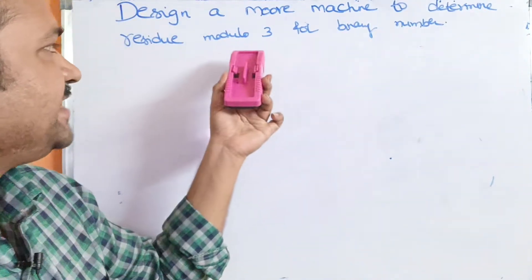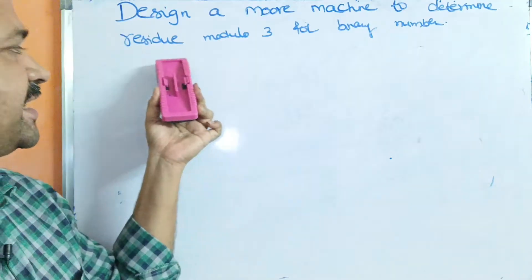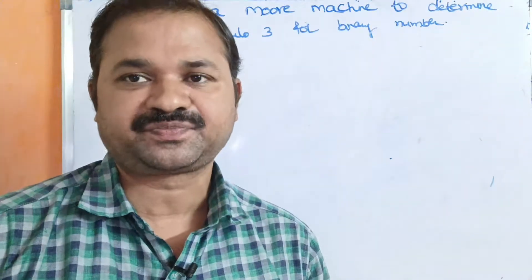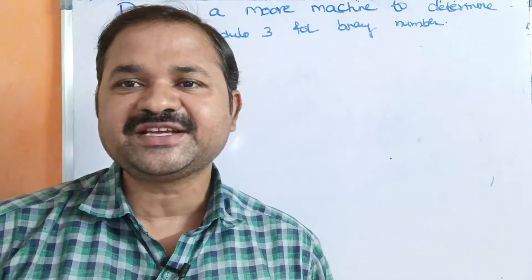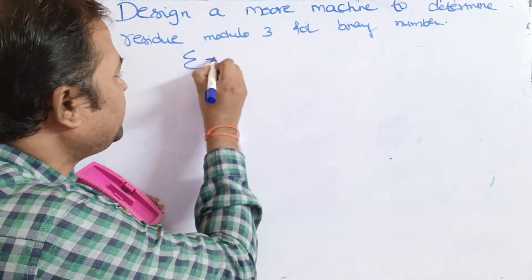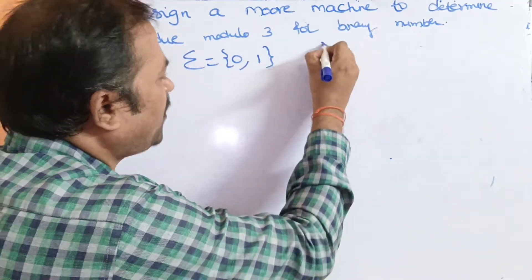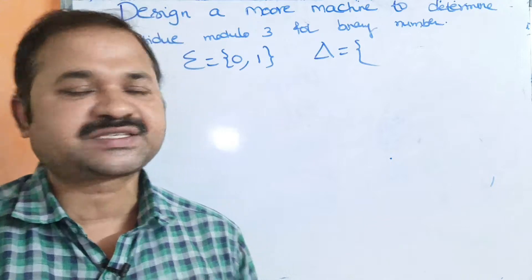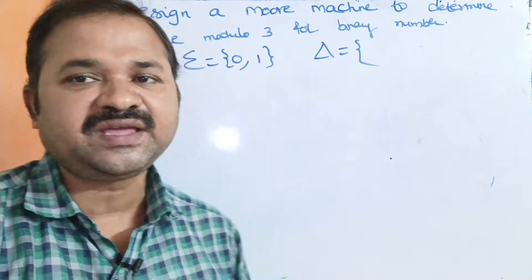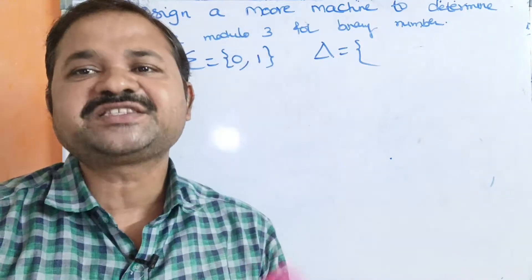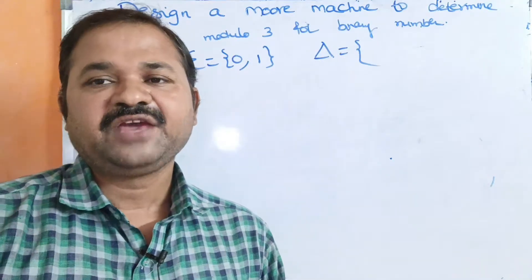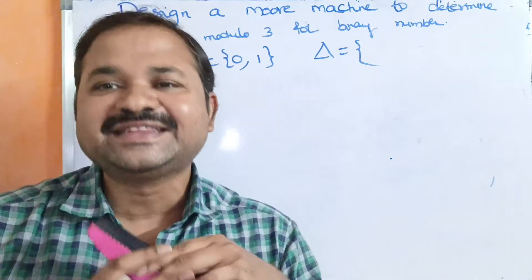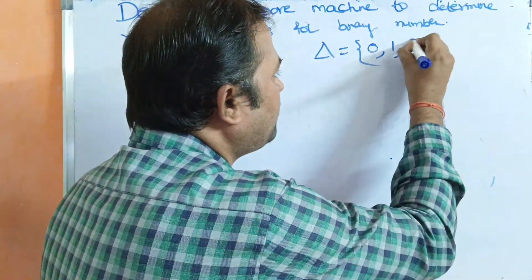Let's see this example: Design a Moore machine to determine residue modulo 3 for a binary number. The input alphabet contains binary numbers — a combination of zeros and ones — so sigma is equal to {0, 1}. The output alphabet delta is equal to the residue modulo 3. When we perform division by 3, we may get either 0, 1, or 2, so delta equals {0, 1, 2}.